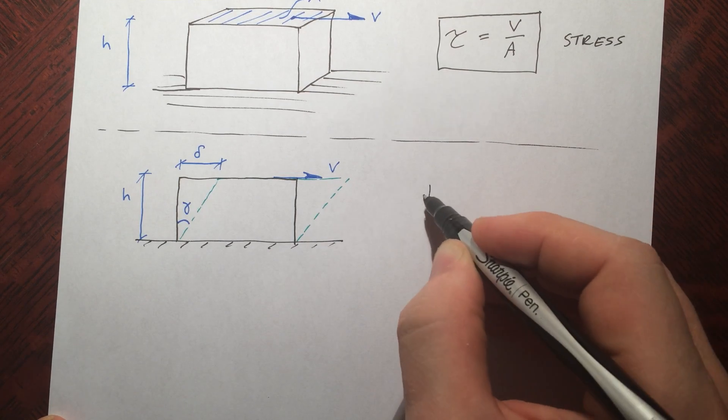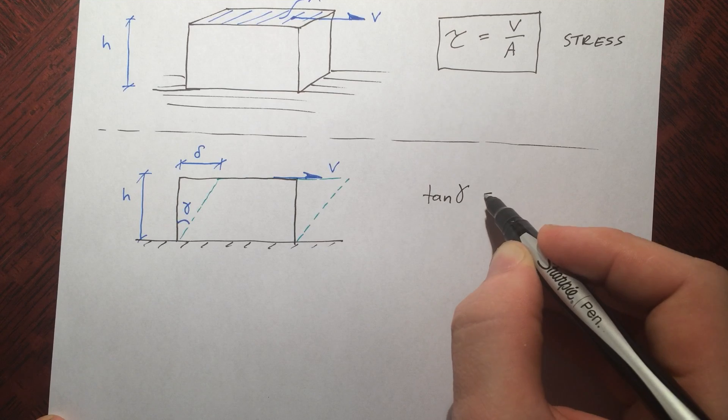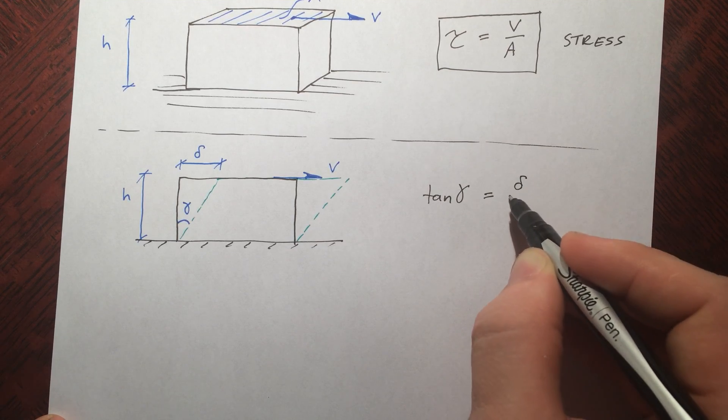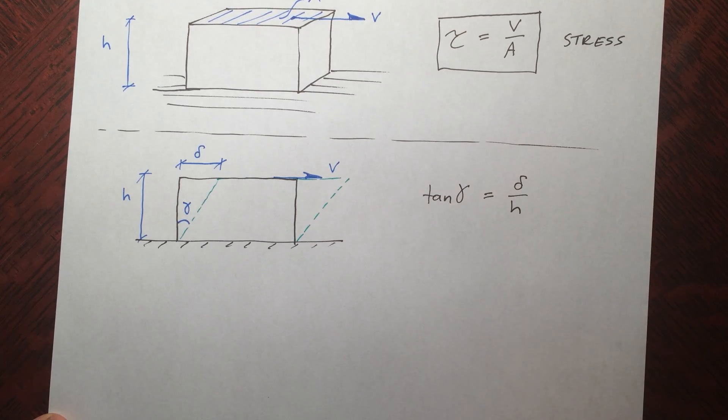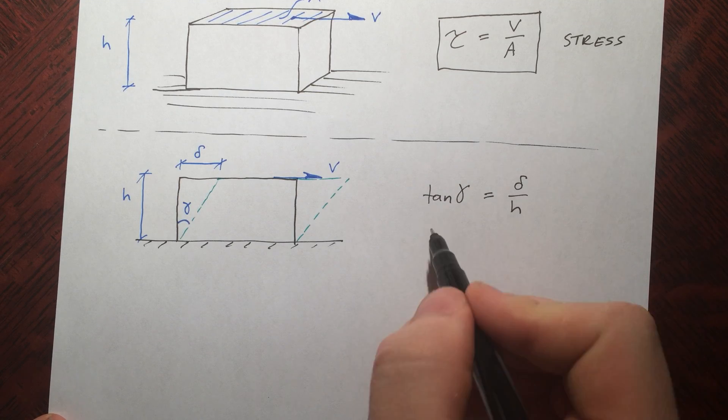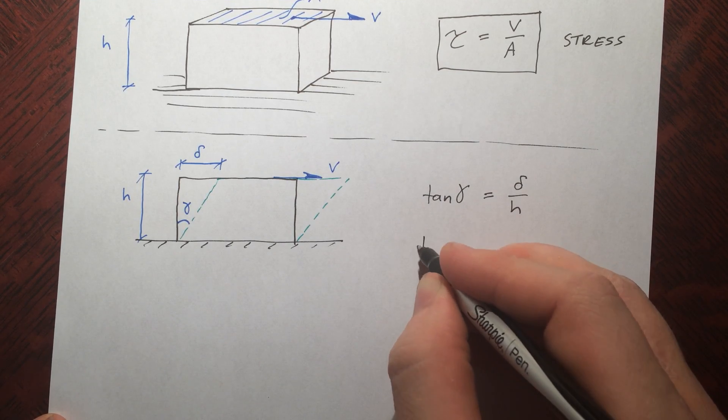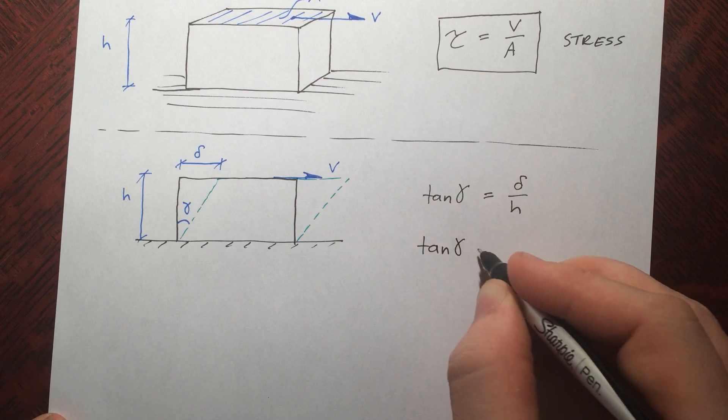Delta, remember that one, and a new one here we call the angle gamma. Now gamma is our strain. So gamma, we define tangent of gamma to be delta over h. Well, that's kind of a norm, we don't want the tangent in there, but we know that for small values of gamma